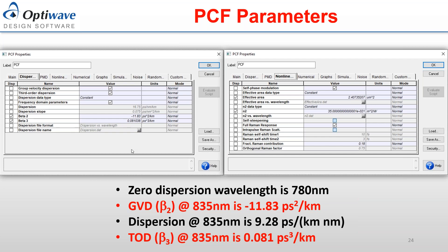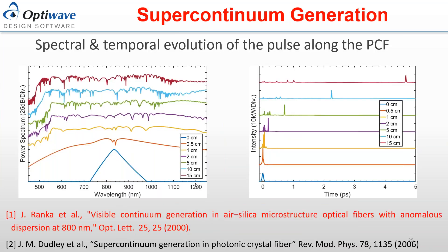In OptiMode, you have the effective refractive index, which is a complex parameter. The imaginary part is mainly used for extracting the attenuation parameter, and the real part allows extraction of all the dispersion parameters. The simulation results are shown at different lengths of fiber representing the photonic crystal fiber length. We have pulses at 0 cm at launch, then after 0.5 cm you start to get pulses that get a bit narrower, with broader spectra at 2 cm, 5 cm, 10 cm, and 15 cm.